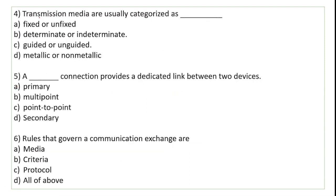Transmission media are usually categorized as — transmission media kaun kaun se hote hain? Guided aur unguided. Guided mein cables aur wires ka use hota hai. Unguided mein air ke through data transmit hota hai. So transmission media are categorized into two types: guided and unguided.